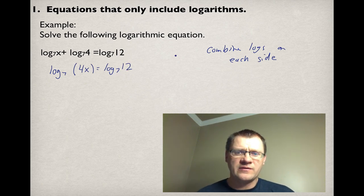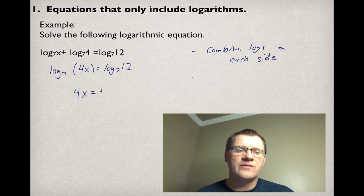Since we have the same logs on both sides, you can now eliminate the logs altogether. So we get 4x = 12, and that means that x will have to equal 3.